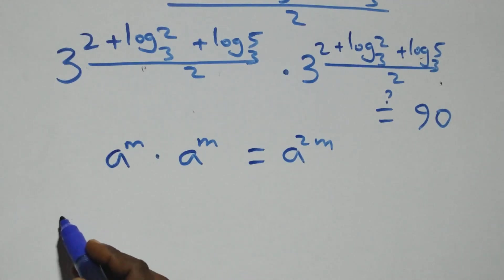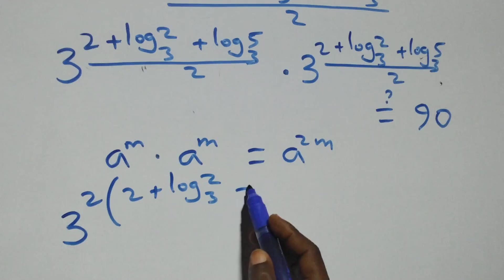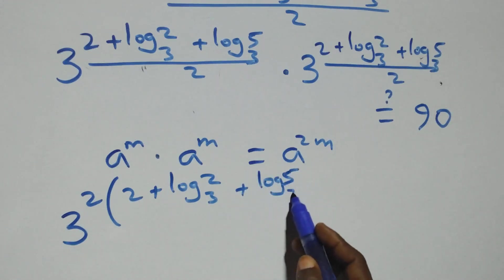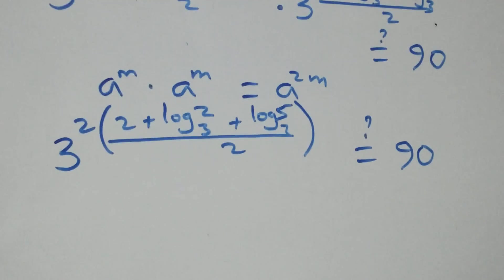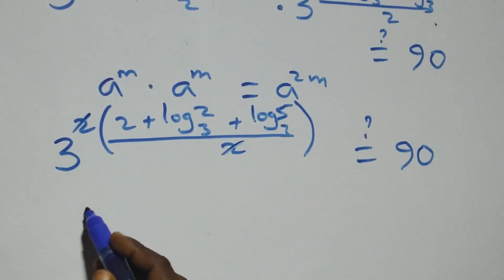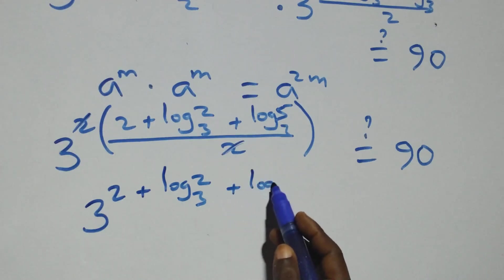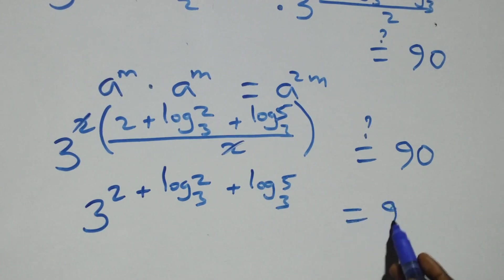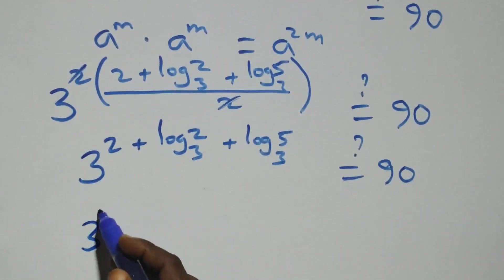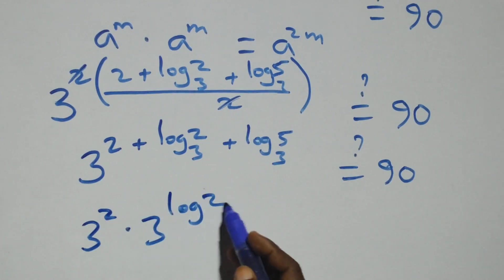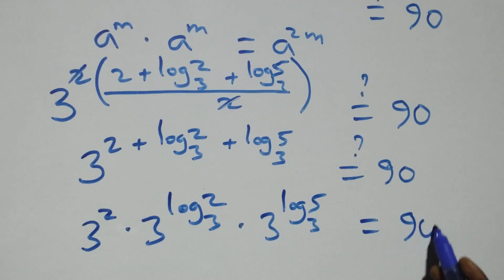We have 3 raised to power 2 times (2 plus log 2 base 3 plus log 5 base 3, all over 2) equals 90. The 2 multiplies and cancels the denominator, giving 3 raised to power (2 plus log 2 base 3 plus log 5 base 3) equals 90. Using the law of indices, this becomes 3 squared times 3 raised to power log 2 base 3, times 3 raised to power log 5 base 3, equals 90.